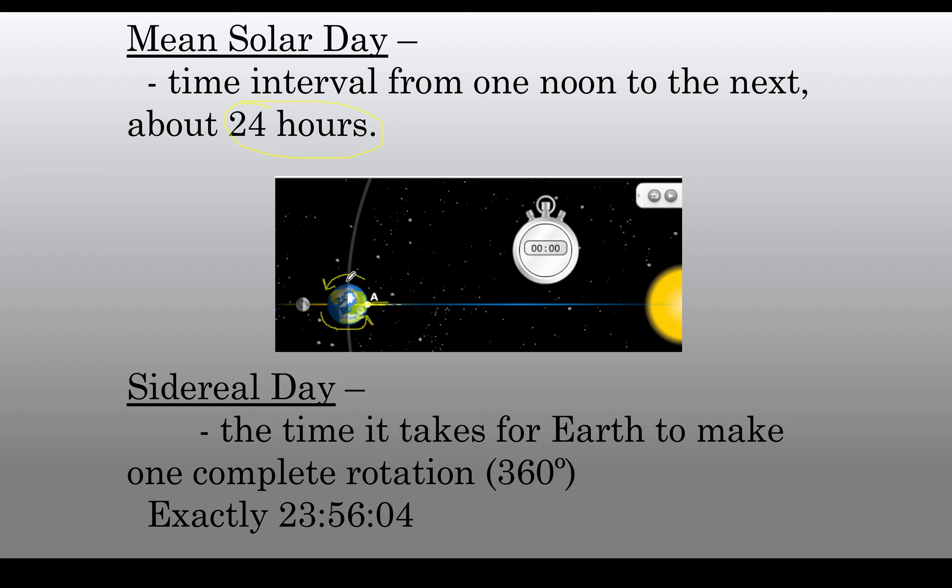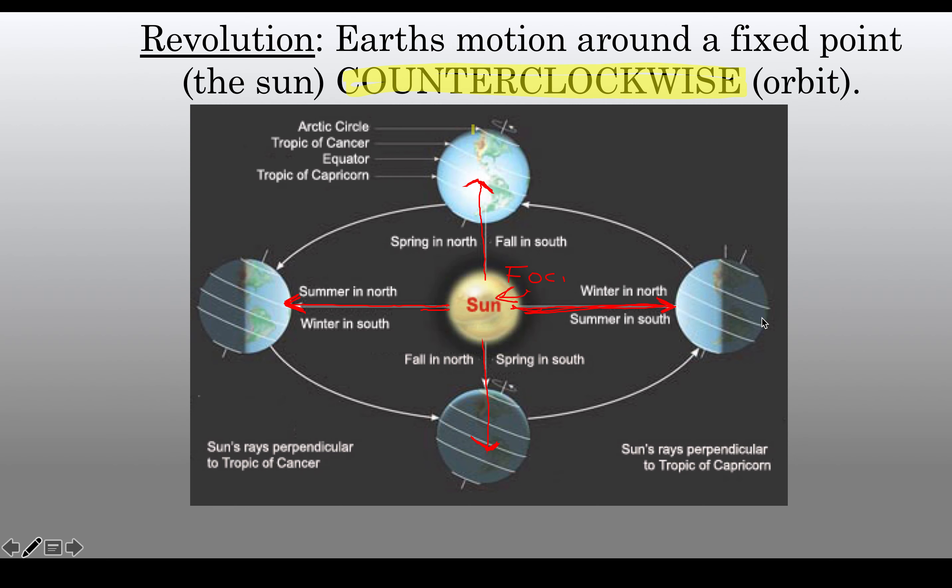However, the actual time it takes Earth from one point to go around is a little less than that, and that's about 23 hours and 56 minutes. Now, that loss of a few minutes every day does not end up causing us to add a day. We add a day due to our revolution around, and because it takes us a little bit more than 365 days to revolve around the sun. Because of that, every four years, we get that leap year, and that's what we're going to talk about now, the revolution.